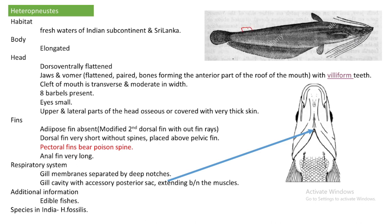The adipose fin, when present, is a modified second dorsal fin. In this fish, the dorsal fin is present but very short, without spines, and placed just above the same line as the pelvic fin. The pectoral fin has a poisonous spine, which is another important feature. The anal fin is very long. Regarding the respiratory system, the gill membranes are separated by a deep notch.